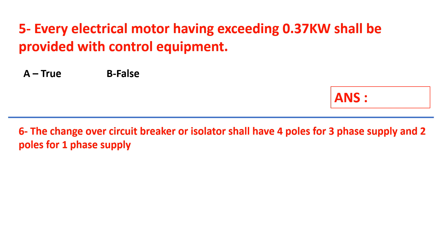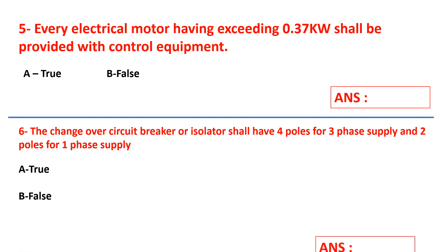Question number six: the changeover circuit breaker or isolator shall have four poles for three-phase supply and two poles for single-phase supply. Is this statement true or false? Select your answer.